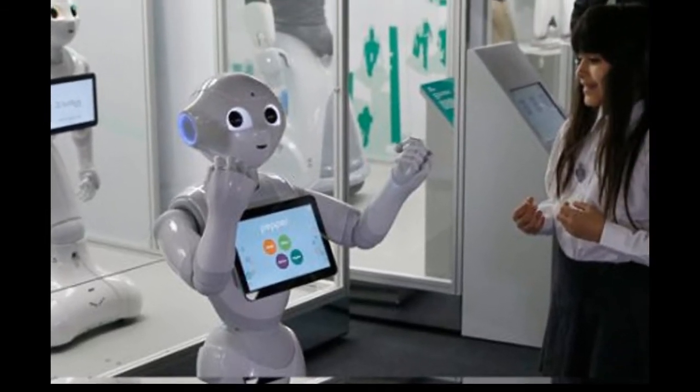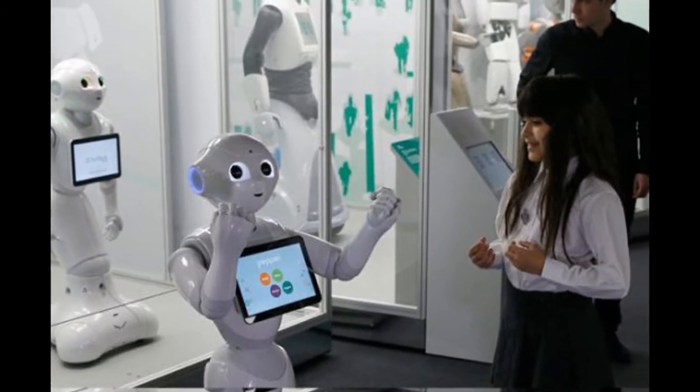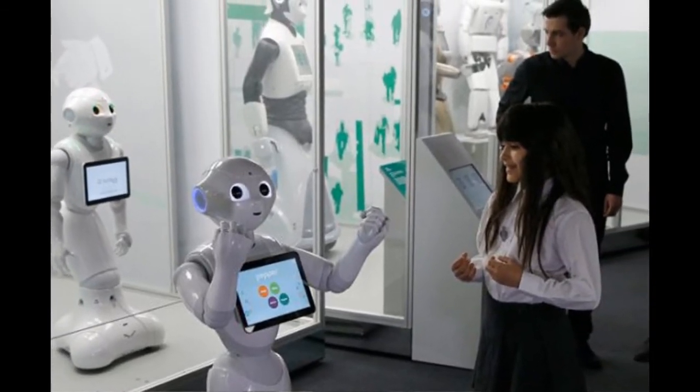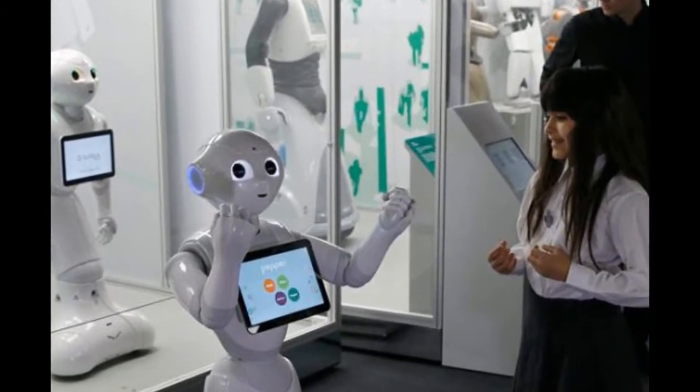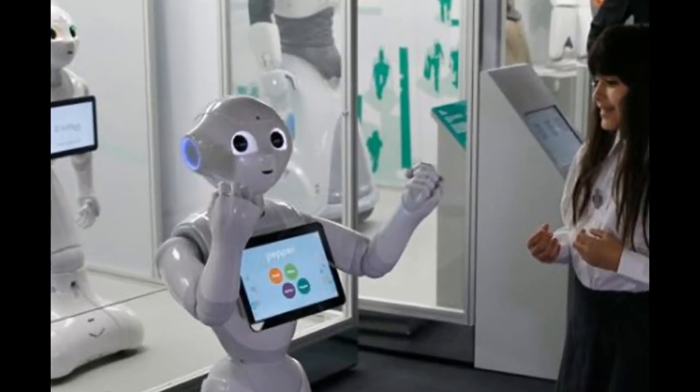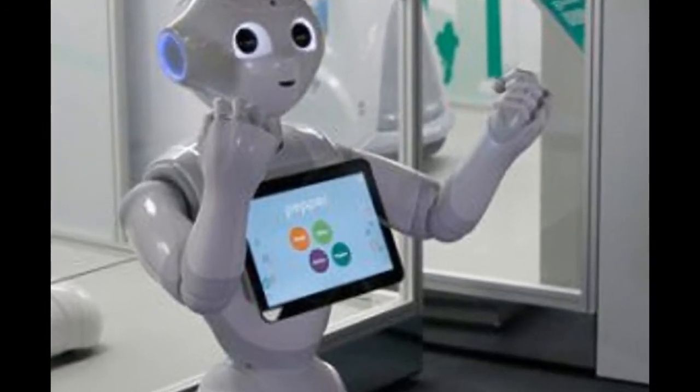In France, a presidential candidate wants to create a robot tax. Artificial intelligence has also divided the scientific community, with renowned physicist Stephen Hawking saying AI could be either the best or the worst thing ever to happen to humanity.